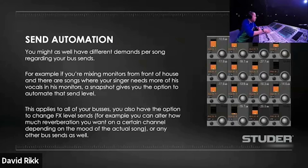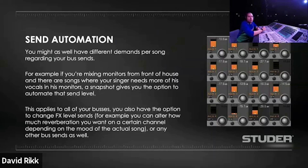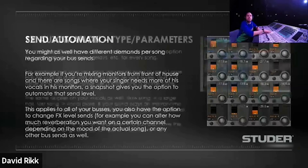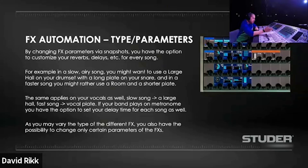Send automation can also come in handy if you're playing with effects sends, because from song to song you can automate how much you're sending a certain channel to a certain aux bus or effects processor — depending on whether you want more reverb on a channel because the mood of the actual song asks for it, or whatever reason. This connects with the next part I usually automate: effects parameters and effects types. Different songs will need a different approach on the amount of effects, the type of effect, and how you set up the parameters of those effects.